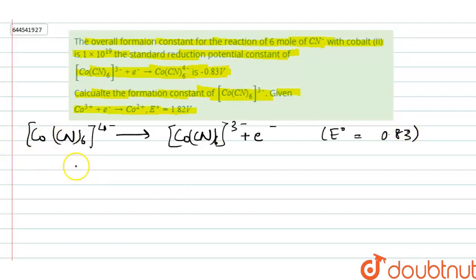Here we will see, this is equation number 1. Equation number 2 will be Co3+ plus an electron that will eventually give us Co2+ and for that E° is approximately 1.82 volt. So overall equation.